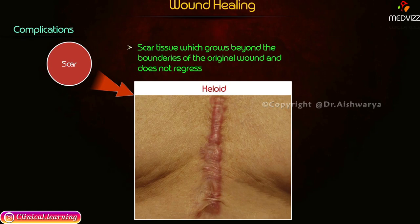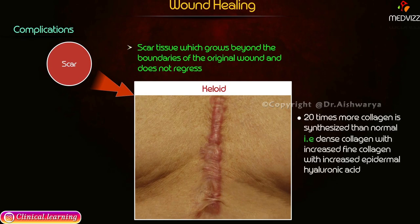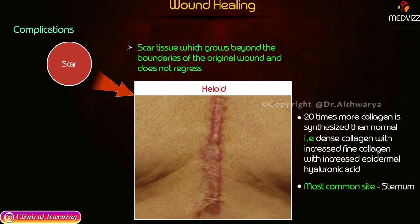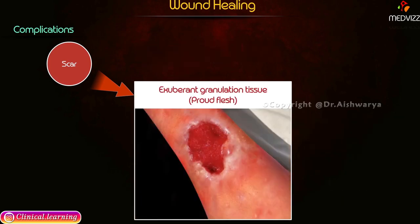If the scar tissue grows beyond the boundaries of the original wound and does not regress, it is called a keloid. In keloid, 20 times more collagen is synthesized than normal — dense collagen with increased fine collagen and increased epidermal hyaluronic acid. Keloid is more commonly seen at the sternum.